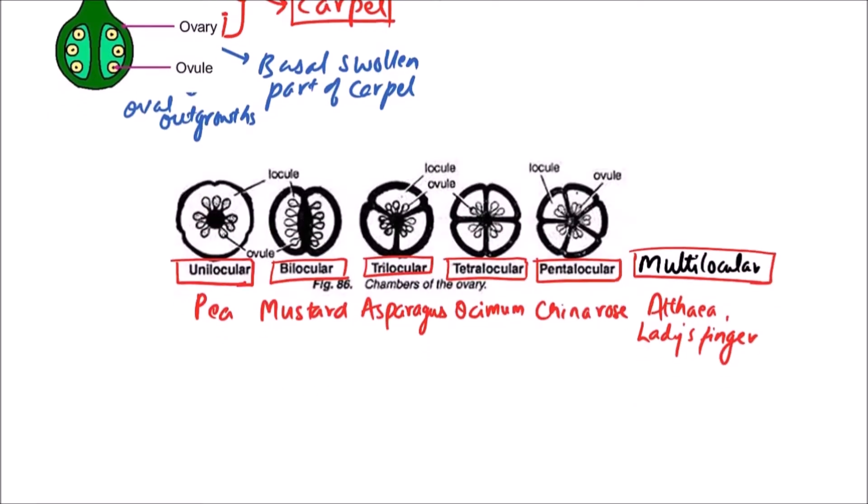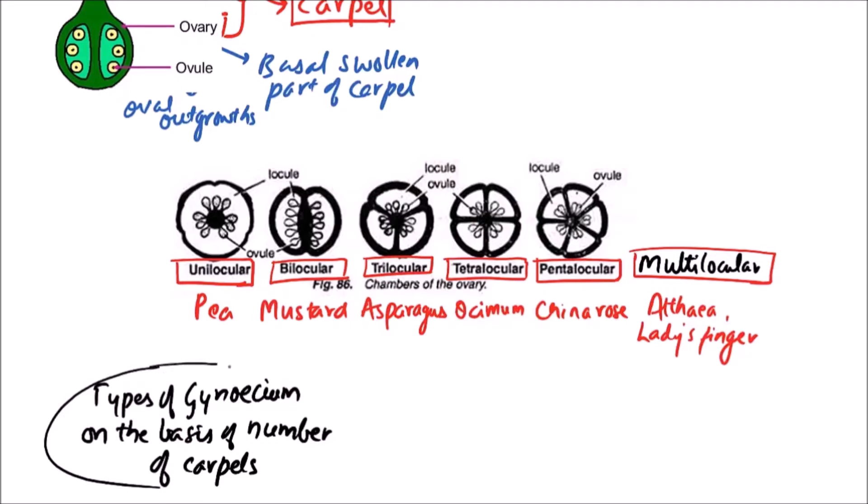The types of gynecium on the basis of number of carpels. These are termed as monocarpillary if number of carpels is one, and bicarpillary if number of carpels is two.